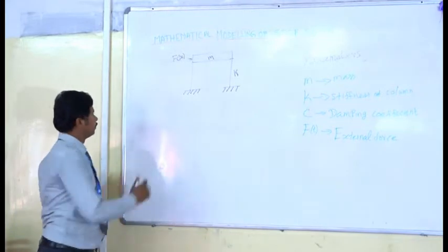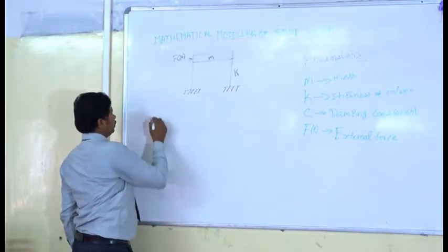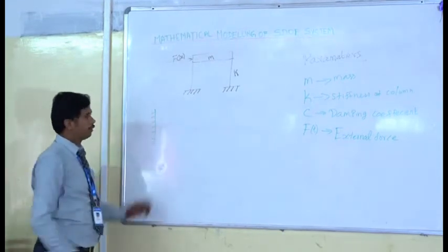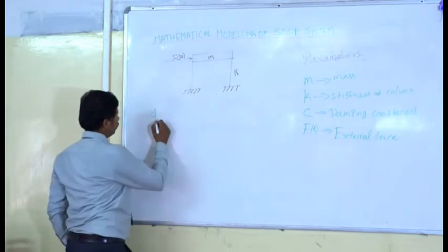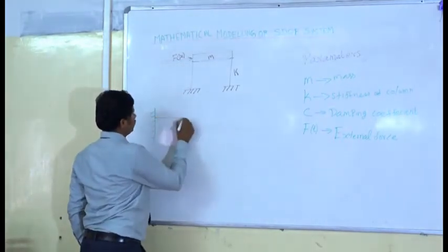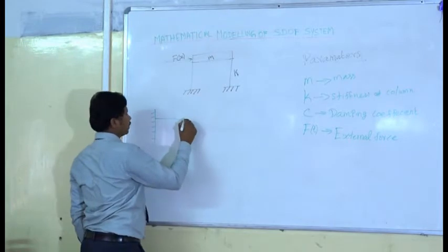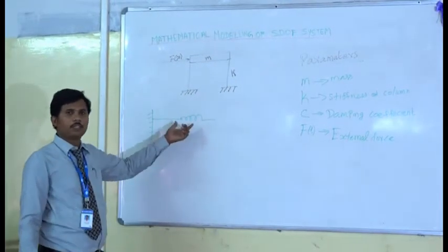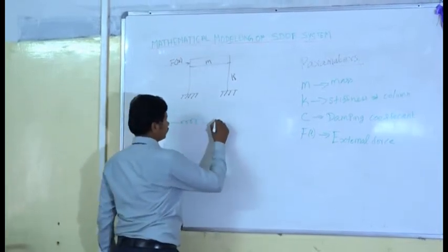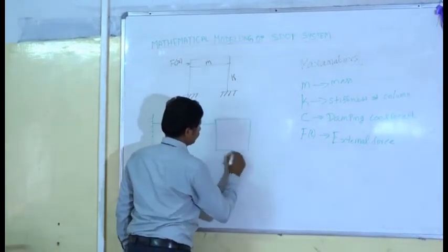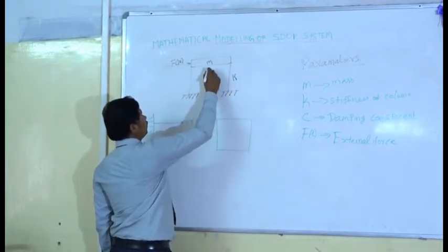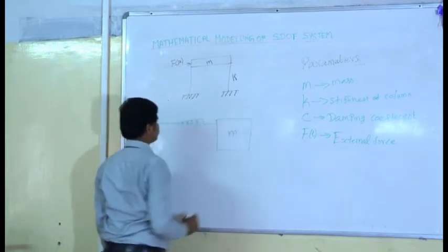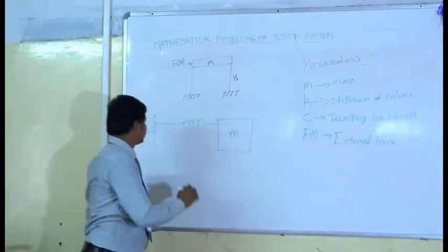Now, we convert the real building frame into a model. This is the foundation. We transform this foundation in the model. The column is represented as spring because the spring has stiffness. The mass represents the body.